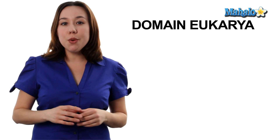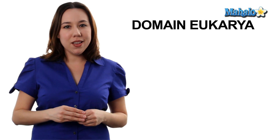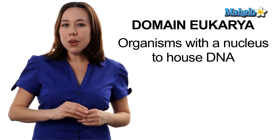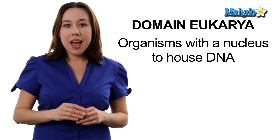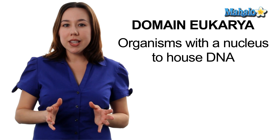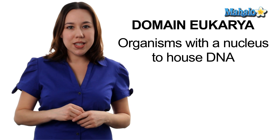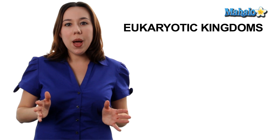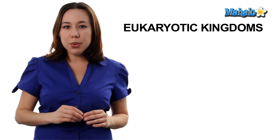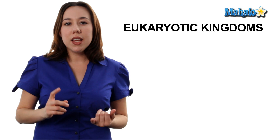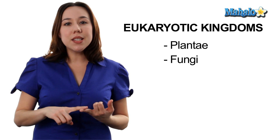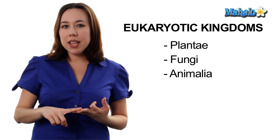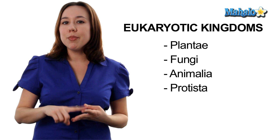And our last one, domain eukarya, or eukaryotic organisms. Eukaryotic organisms have a true nucleus that houses their DNA. Domain eukarya will have multiple kingdoms, including kingdom plantae, kingdom fungi, kingdom animalia, and kingdom protista.